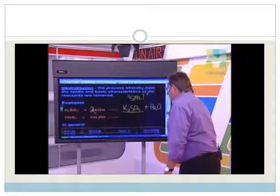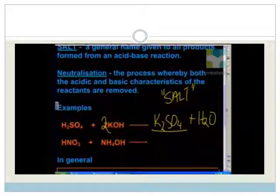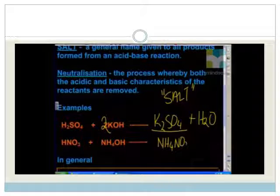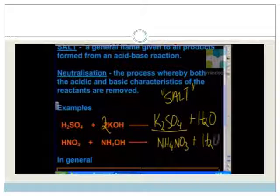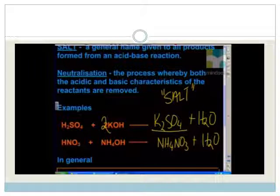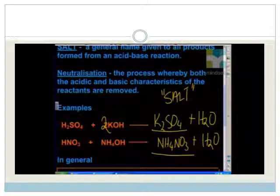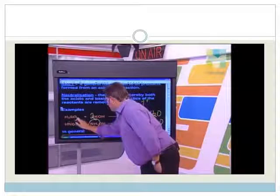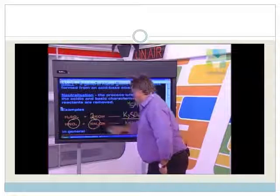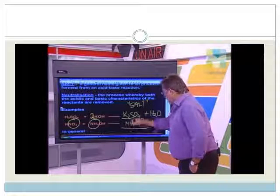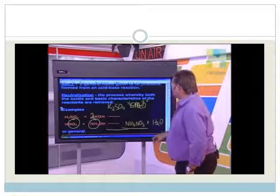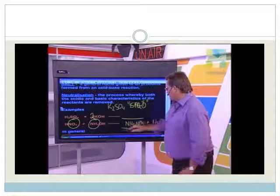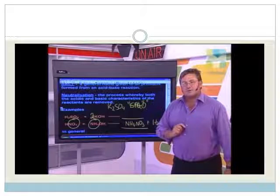A salt is simply the general name or term that we give to the product of an acid-base reaction. Another example, nitric acid plus ammonium hydroxide produces ammonium nitrate plus H2O. That is balanced as it stands. There is another example of a salt. Ammonium nitrate is a salt. It's a product of an acid, the NO3 part from the acid and the NH4 part from the base. The base residue and the acid residue. There's our salt over there.